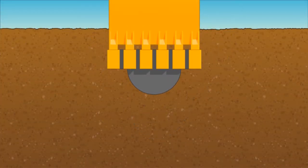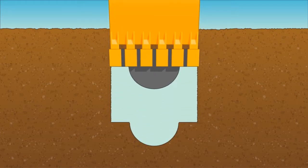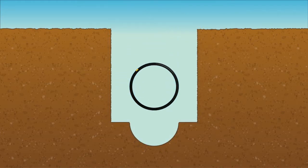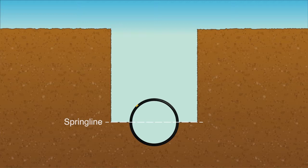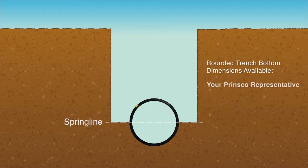The rounded trench bottom should closely fit the outside diameter of the pipe to provide sufficient support to the spring line, which is the horizontal center line of the pipe. The dimensions of the rounded trench bottom for each diameter pipe are available from your Prinsco representative or at Prinsco.com/ag-resources.